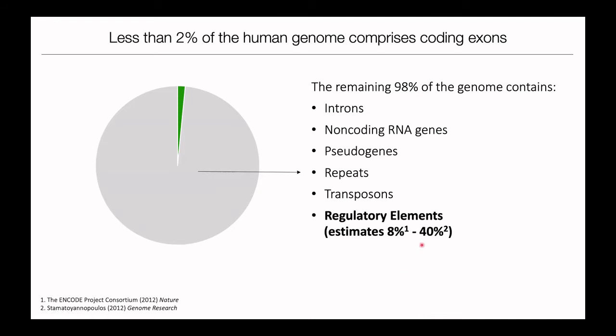Among all these elements, some regulate the transcription of genes — these are what I call regulatory elements. The estimate of what percent of our genome is dedicated to regulatory elements varies from paper to paper, but roughly around 20% would have one kind or another of regulatory function.